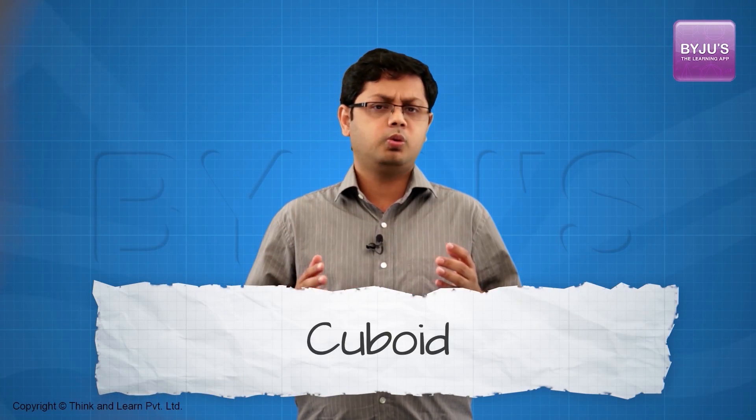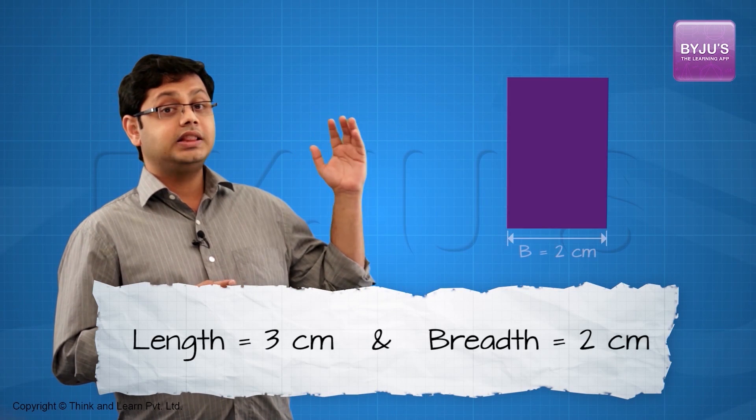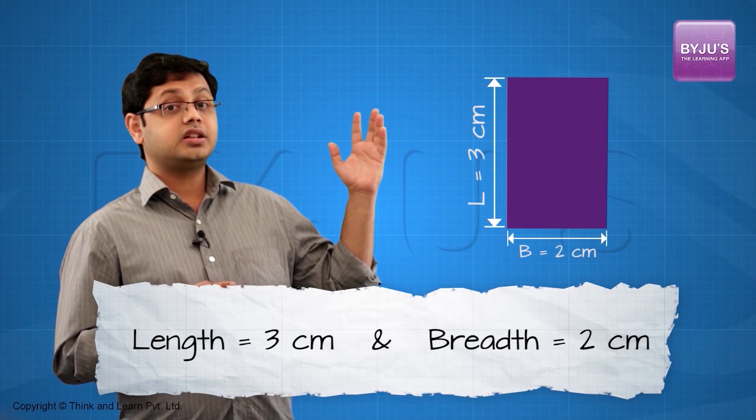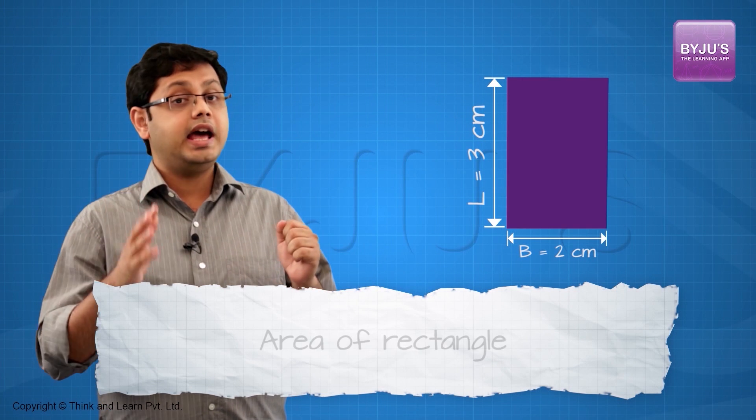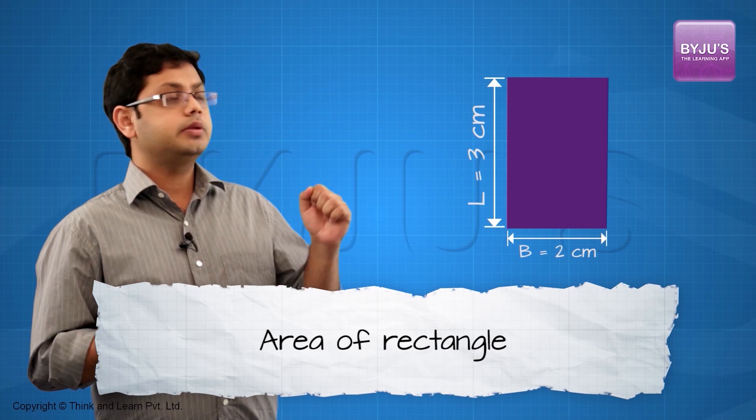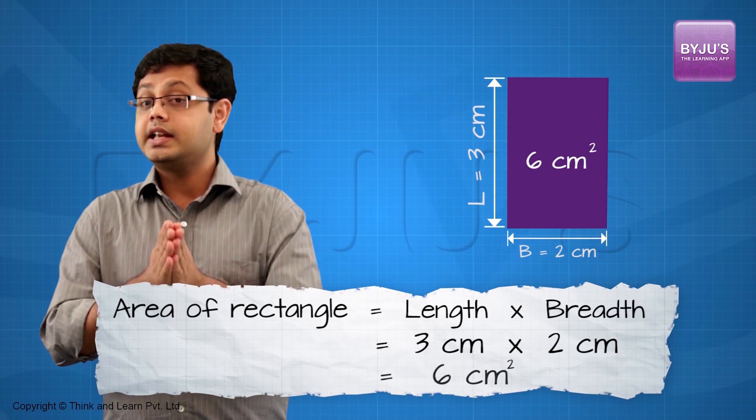Having said that, let us move on to a cuboid now. So a cuboid is formed by extending a rectangle, right? Let us say we have a rectangle with length and breadth as 2 cm and 3 cm. So what will be the area of this rectangle? It is going to be length times breadth, which is going to be equal to 6 cm².